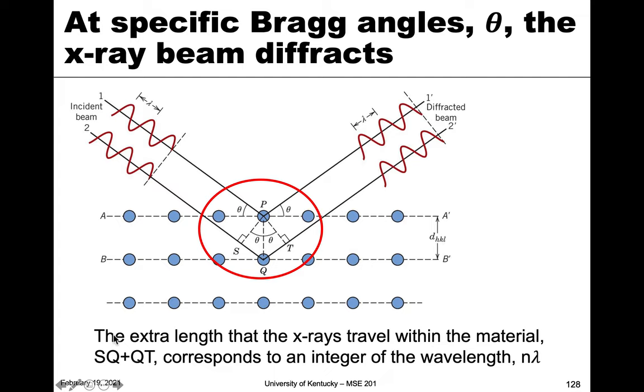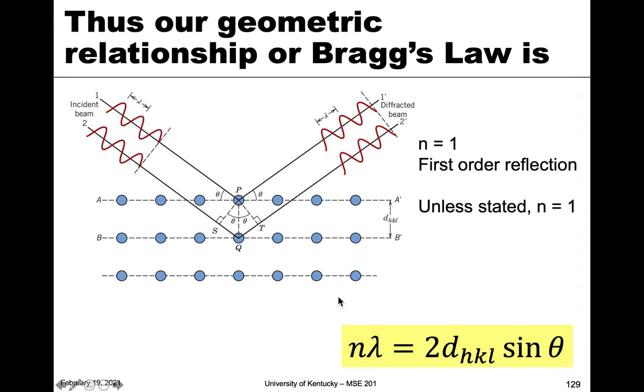If we put that all together and calculate the distance of SQ and QT, we find that we can define that by the angle theta, and we get what is known as Bragg's law. This side over here on the right is 2d_HKL, the interplanar spacing, times sine theta. That distance SQQT is this, so that's where the 2 comes from. The other side is n lambda, some integer of the wavelength.